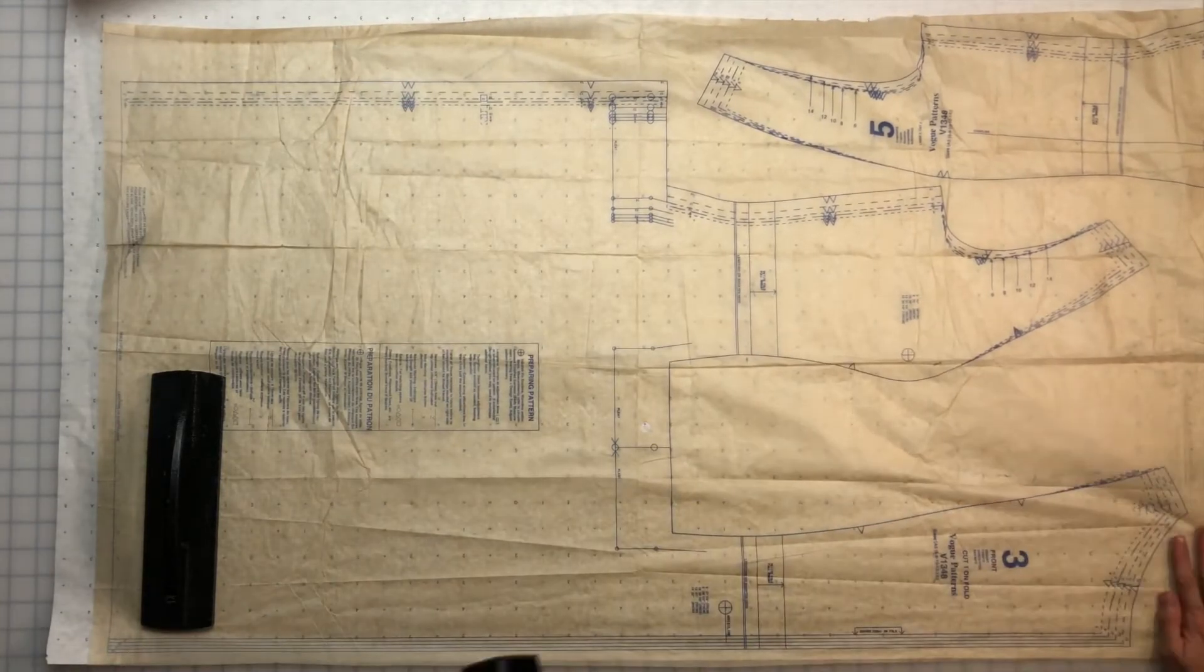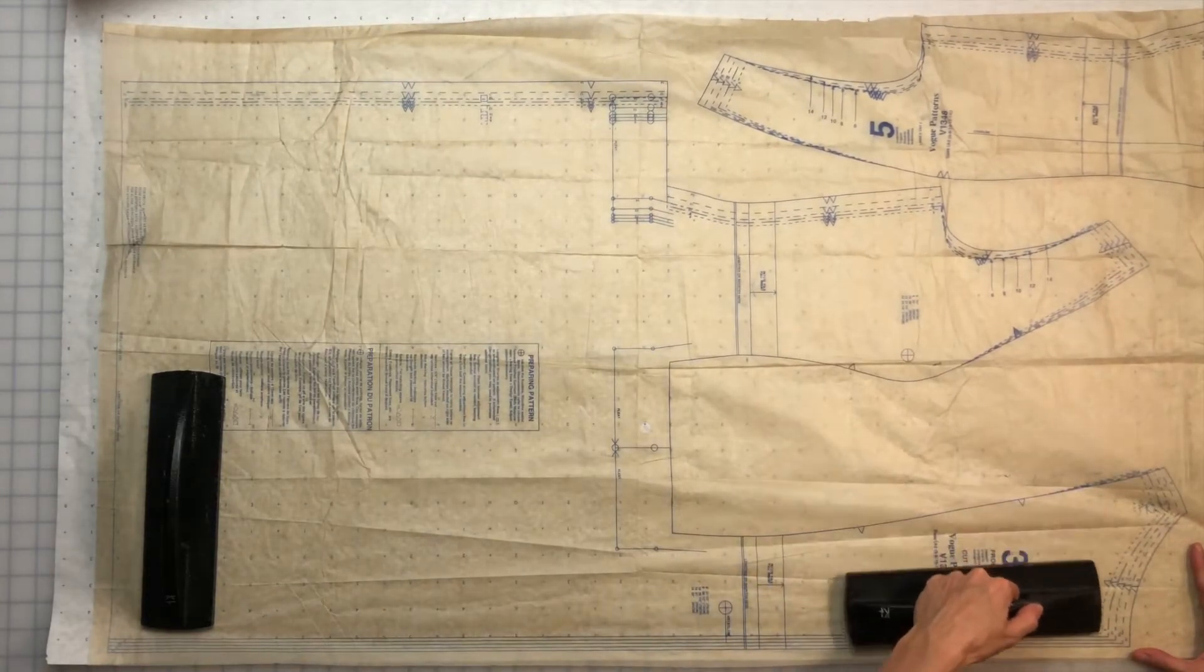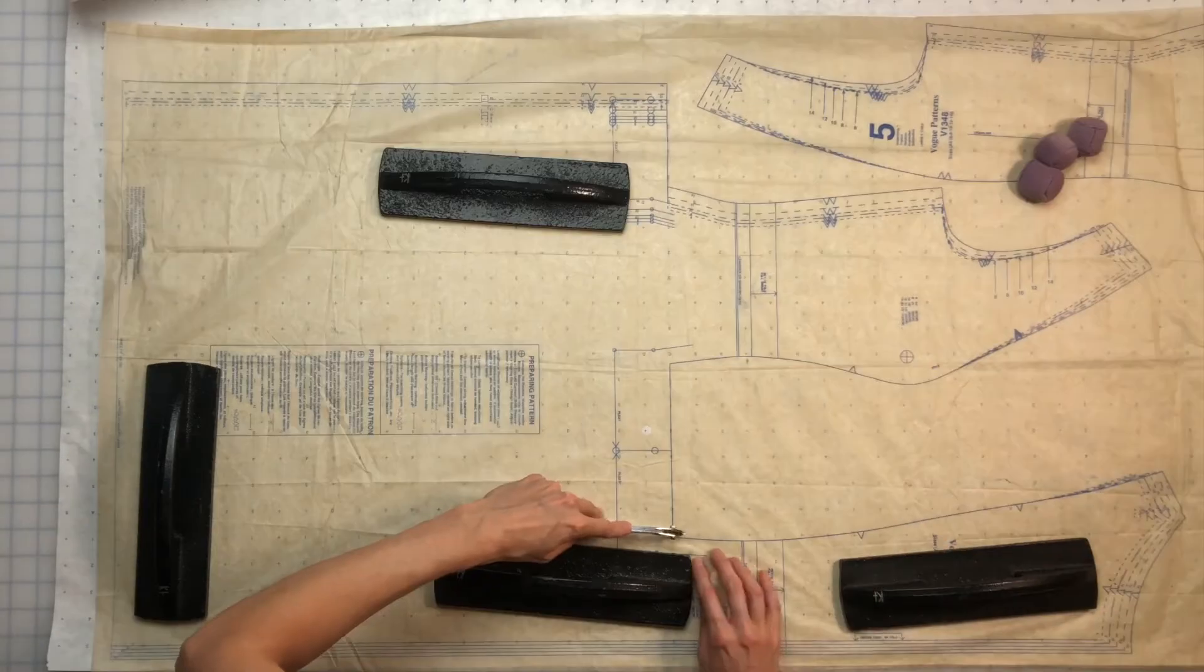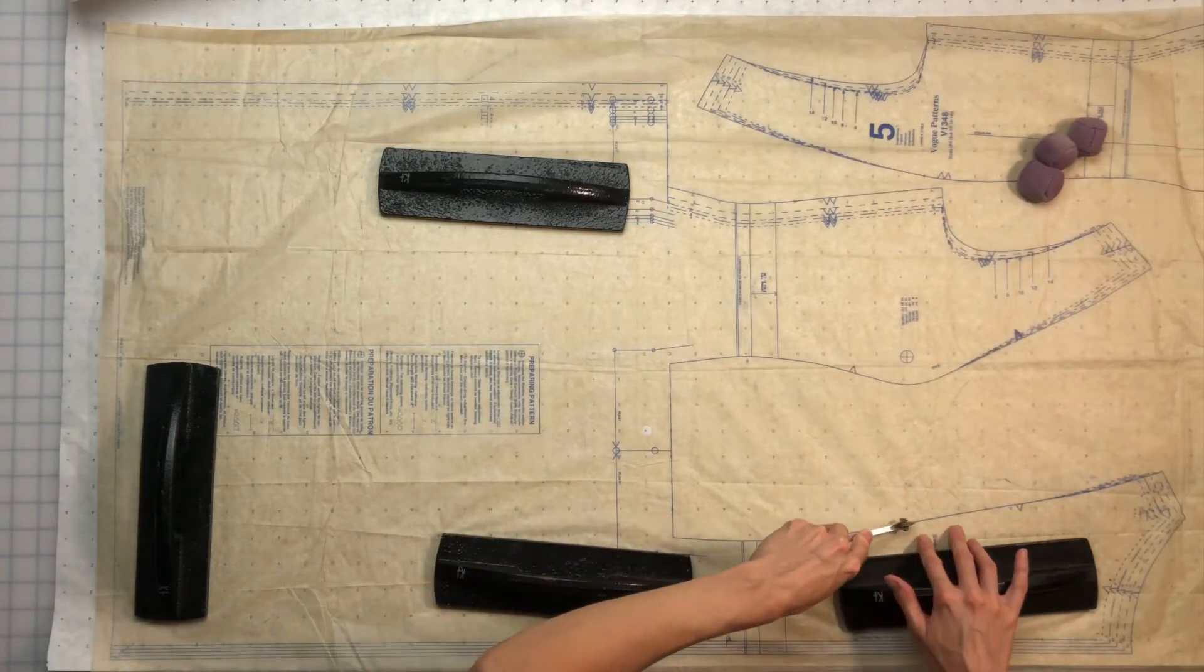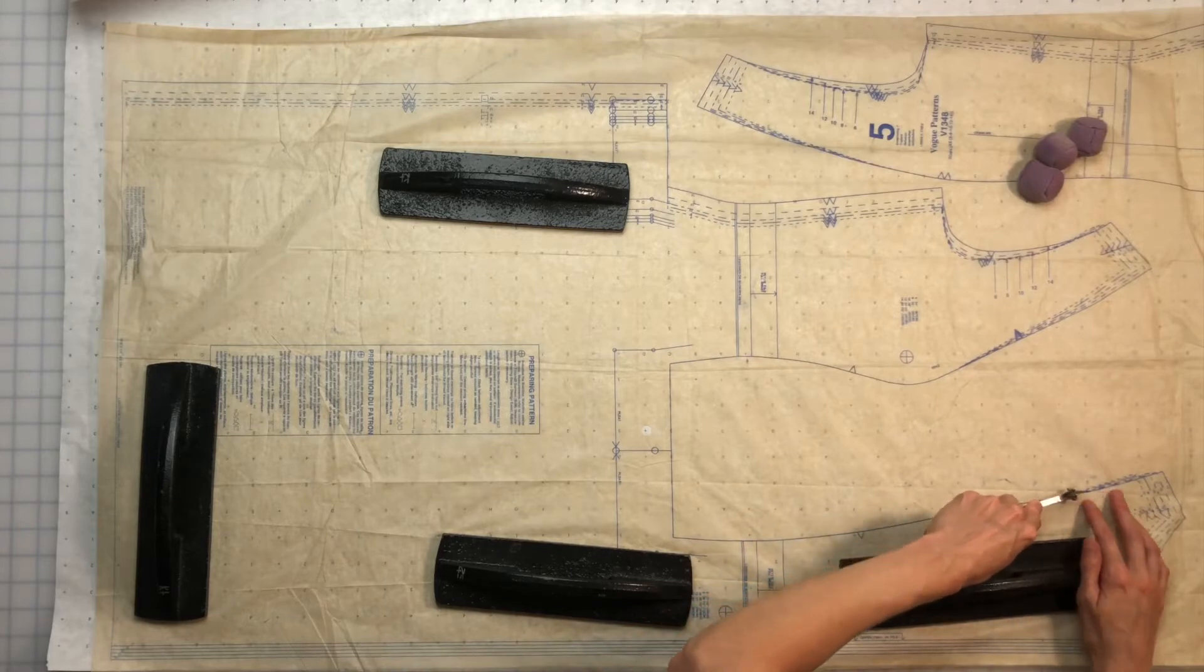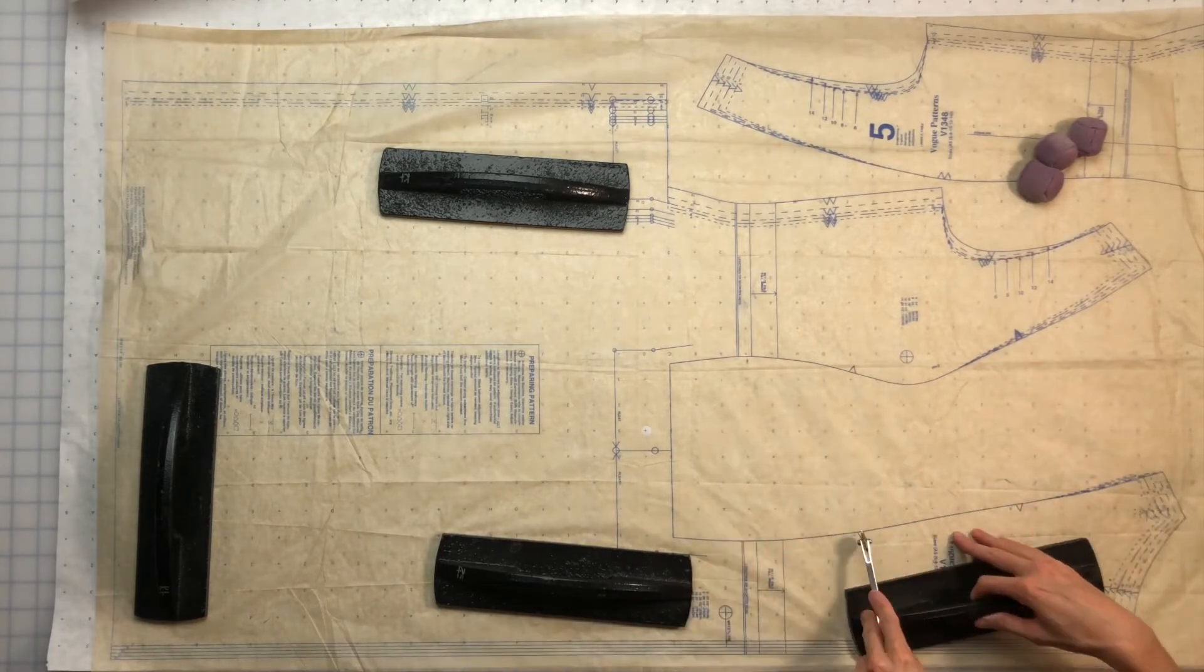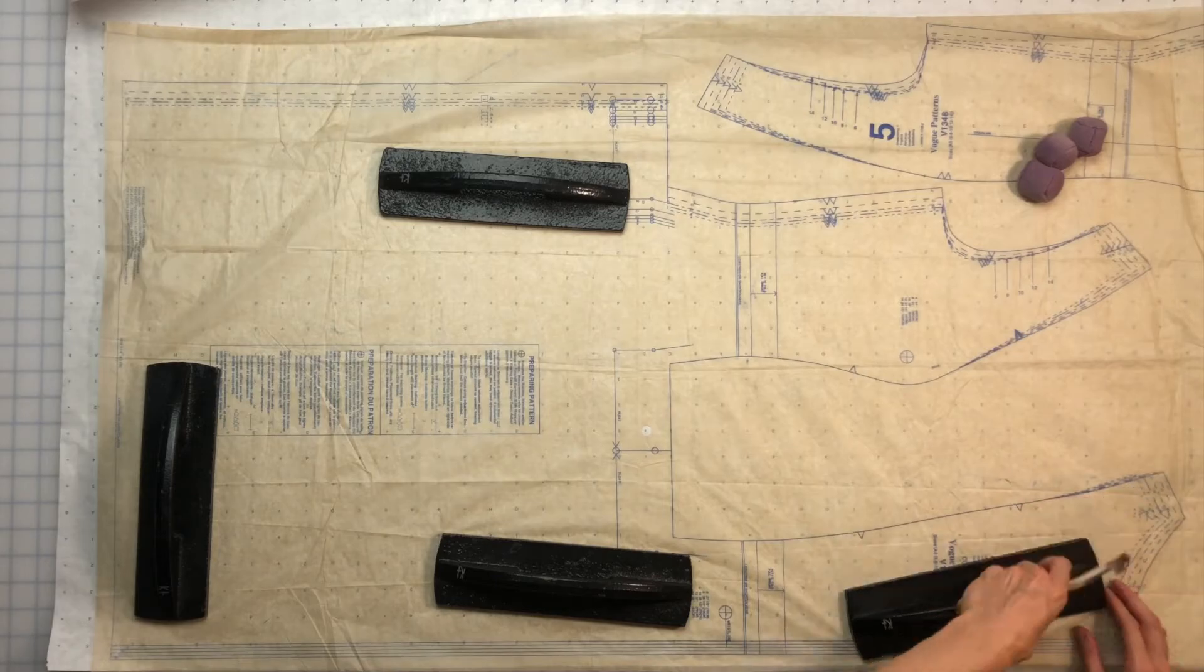I'm expecting a lot of alterations so I'm going to transfer the pattern onto real pattern paper. I'm using a tracing wheel to trace out the pattern pieces I need. That's all of the dress pieces and the lining pieces. The pocket bags and skirt lining pieces can be traced right onto fabric when I'm ready for them.